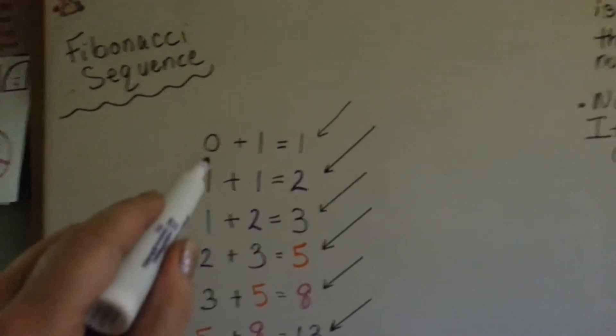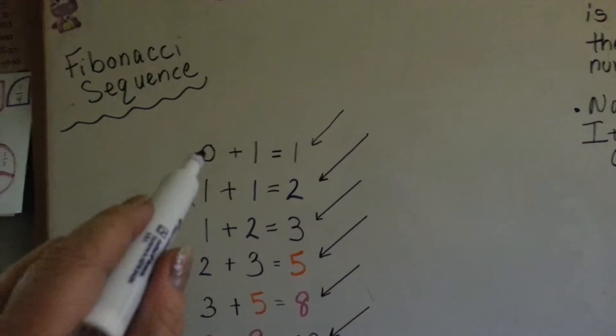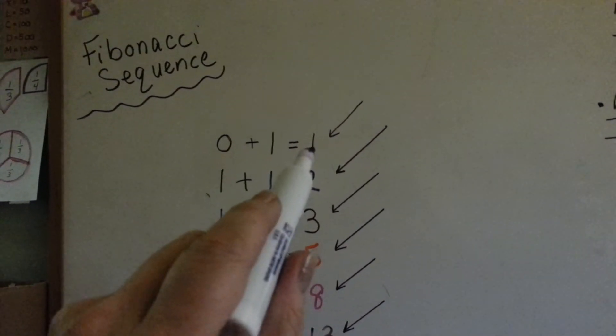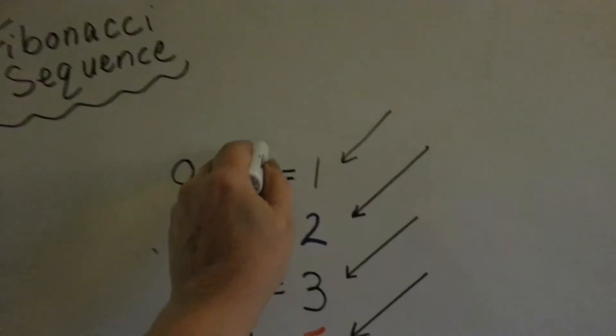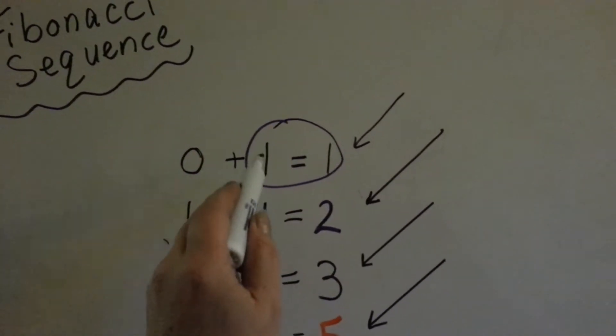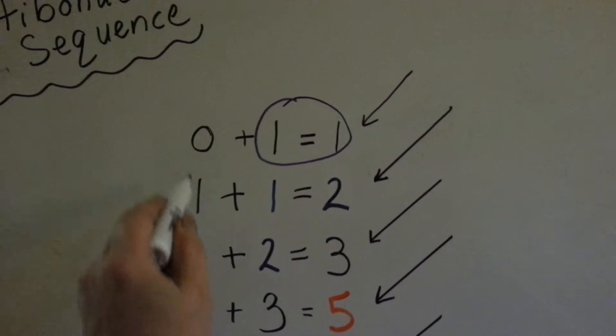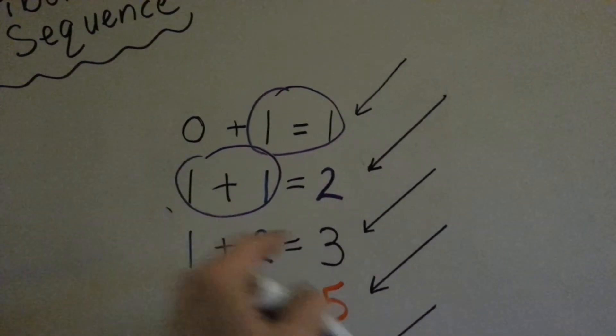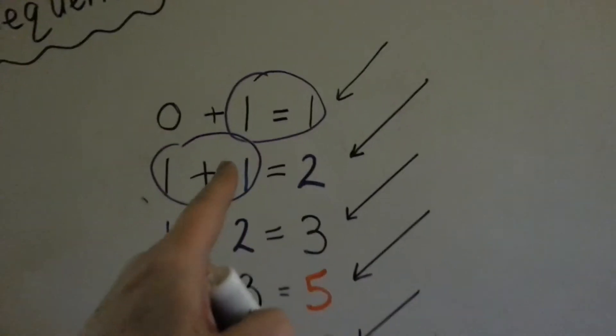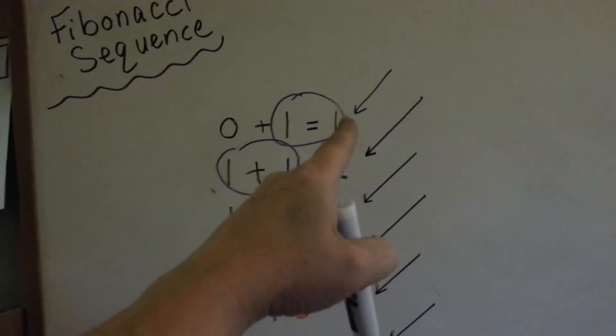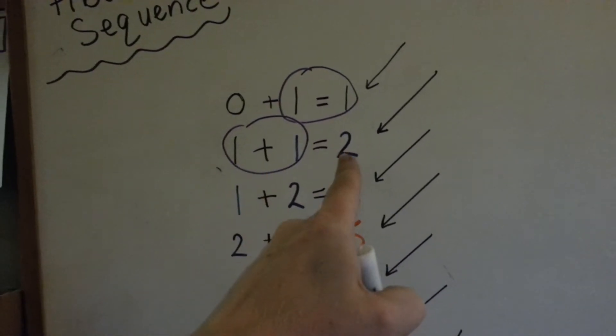So here's what you do. You take 0 and add it to 1, and that's going to equal 1. Then you take these last two, the addend and the sum, and you put them here to get the next number. So 1 plus 1, right here, is equal to 2.